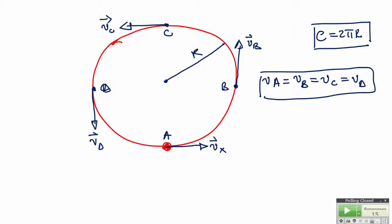The direction of motion of the particle around the circular path changes continually. Because the direction of motion changes continually, it means that the object accelerates. This leads to a very important statement: any object moving in a circular path accelerates.